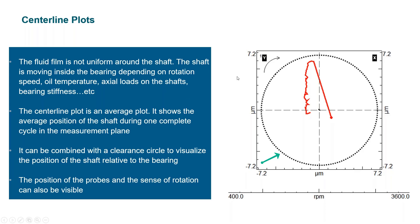So in the display on the right, the dotted line represents the limits of the bearing around the shaft. And you can see in this example that the shaft has been moving during the run-up, run-down phase, but it has never been touching the bearing.